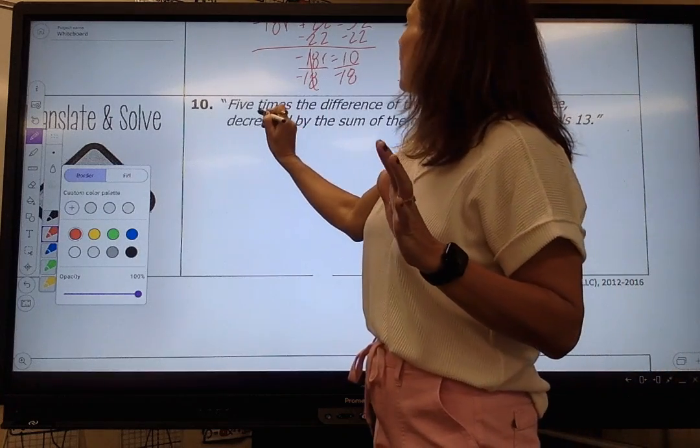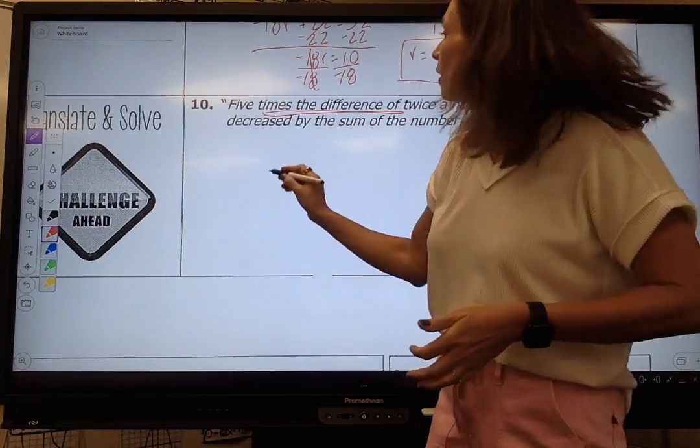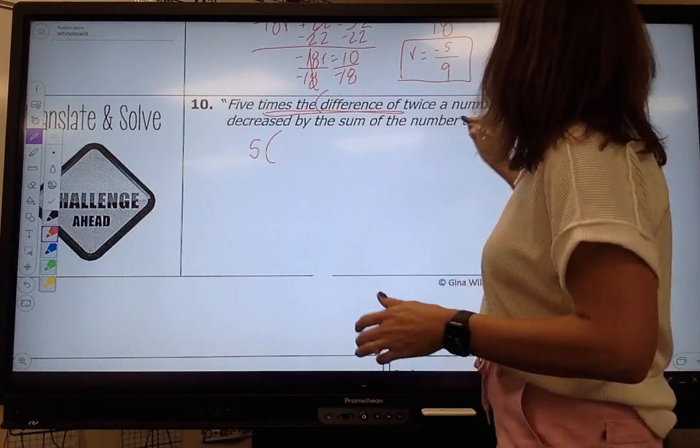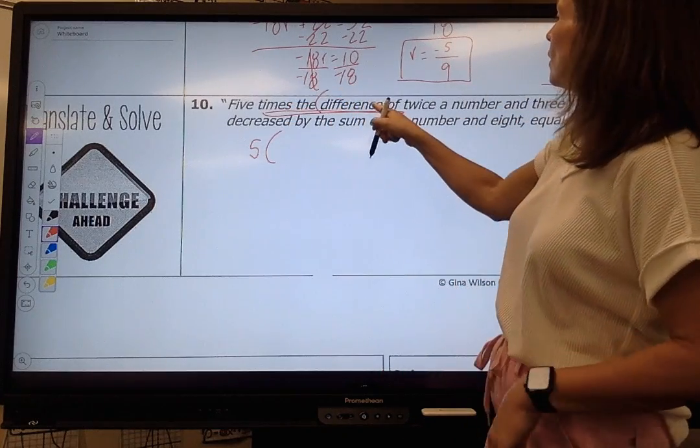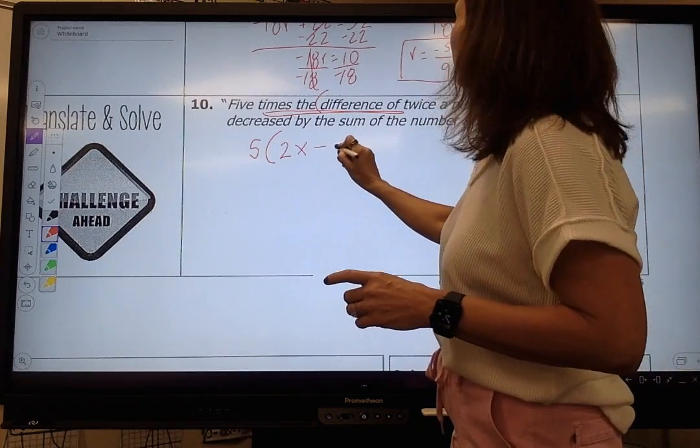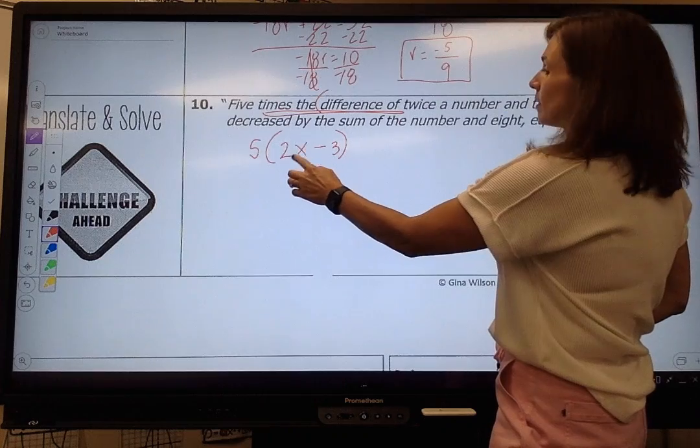Five times the difference of twice a number in three. So it's saying five times the difference of. Remember, this is a special case that means distribution. Five times, times what? The difference of twice a number in three. So difference means subtraction, twice a number. So 2x minus 3. Do you see how that's five times the difference of twice a number in three?